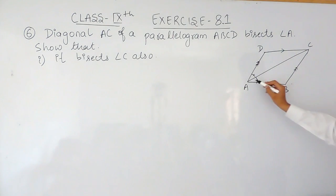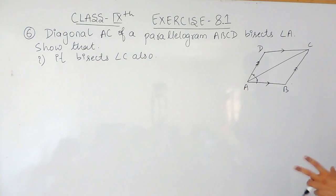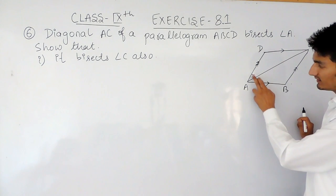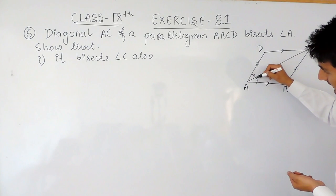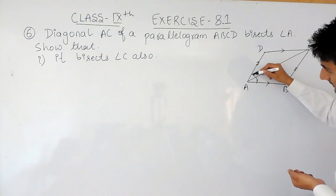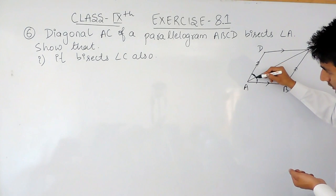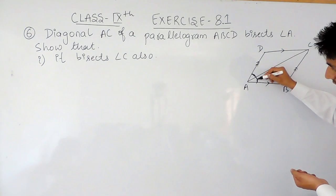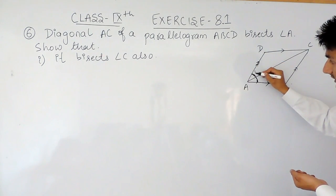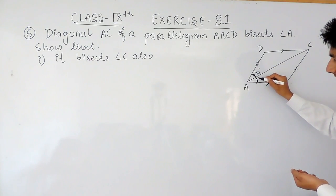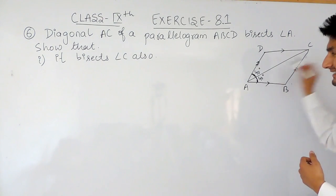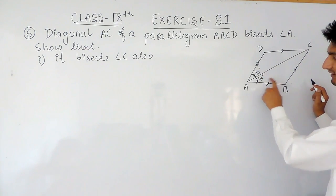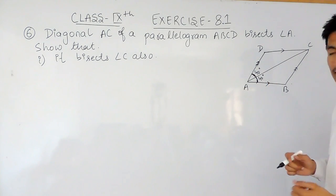It is given that diagonal AC bisects angle A. Bisecting means dividing this angle into two equal parts. So if this is a complete angle and it is bisected, this angle must be equal to this angle. For example, if this angle is 40 degrees, this must also be equal to 40 degrees — meaning if the complete angle is 80 degrees, bisecting divides it into two equal parts of 40 degrees each.